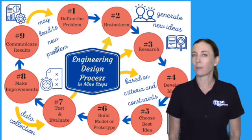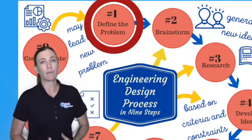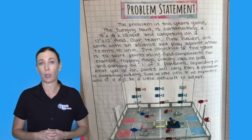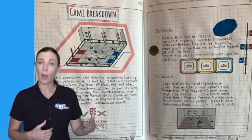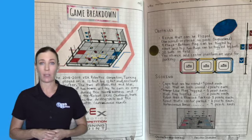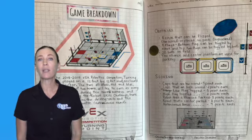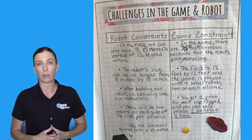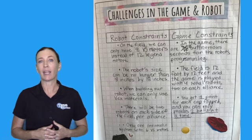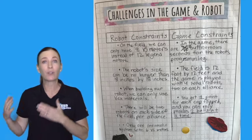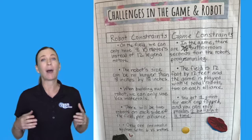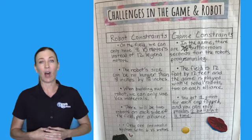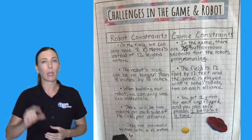The first step is define the problem. When you define the problem, you come up with a problem statement that describes the robot you're trying to build, what you want it to do, how it's going to score, how it's going to pick up the game field elements. You also want to list the criteria and constraints. Criteria are the things you must have — like it must be built out of Vex parts. Constraints are your limitations — like you can only build a robot to a certain size or use so many motors. It's important to always refer back to these criteria and constraints to make sure you're not going outside those boundaries.